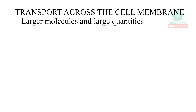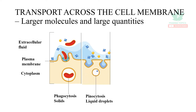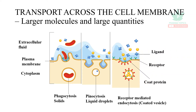For larger molecules, there are three types of transport. First is phagocytosis, which ingests larger solutes. Second is pinocytosis, which ingests larger liquid droplets. Third is receptor-mediated endocytosis, which takes in materials through receptors.